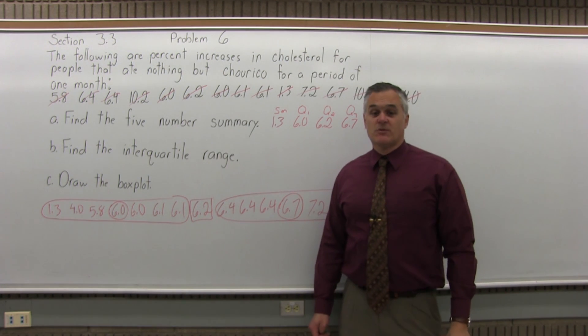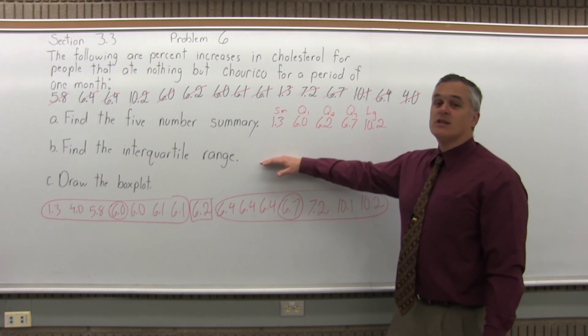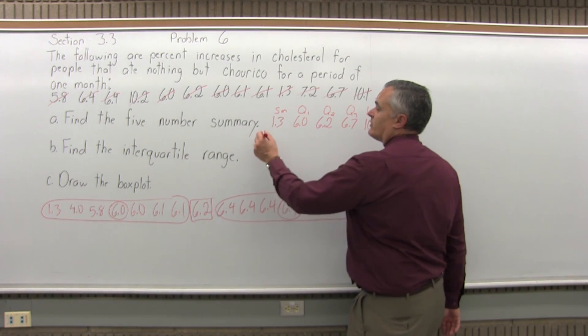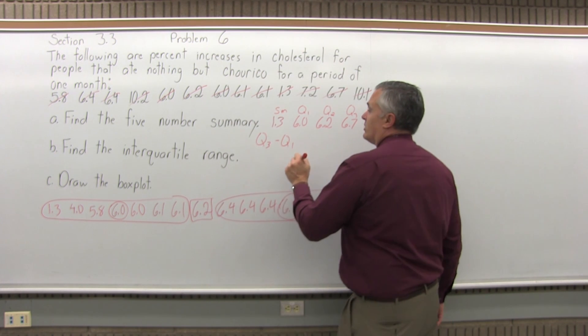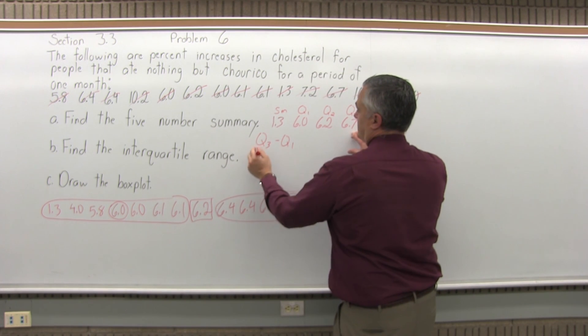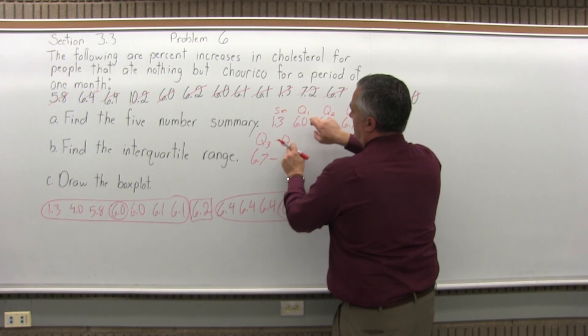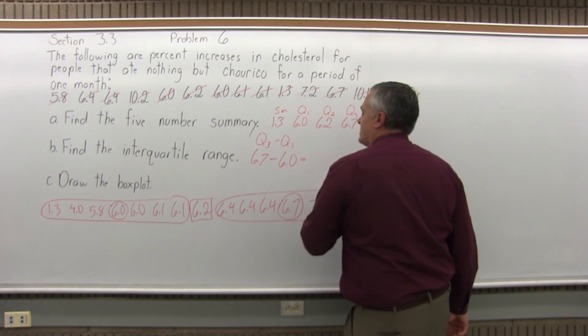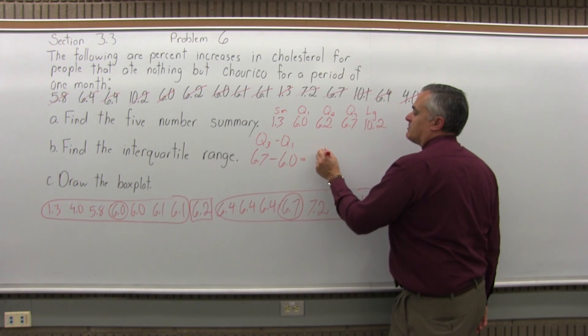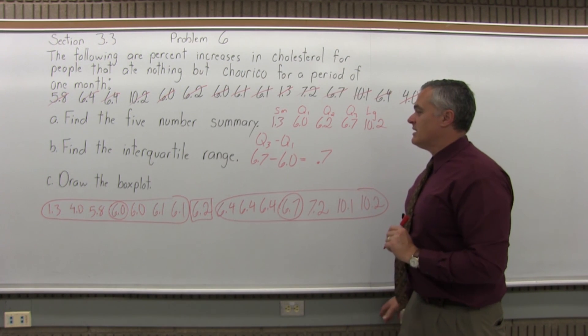So now I have my five number summary. Next, part B, find the interquartile range. So interquartile range is Q3 minus Q1. Q3 for this problem is 6.7 minus Q1, which is 6.0. 6.7 minus 6.0 is 0.7. And finally, draw the box plot.